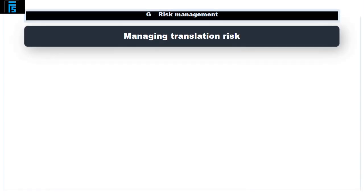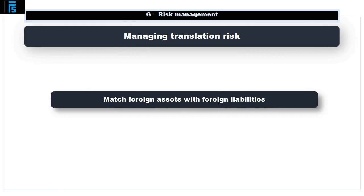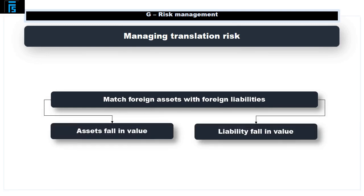Managing Translation Risk. The easiest way to manage translation risk is to match foreign assets with foreign liabilities, i.e. use foreign currency finance to purchase the assets. The impact of this is that if the asset falls in value in domestic currency terms, the liability will also fall in value, thereby offsetting the loss in asset value.